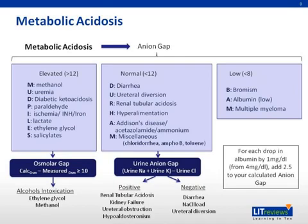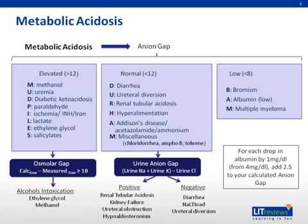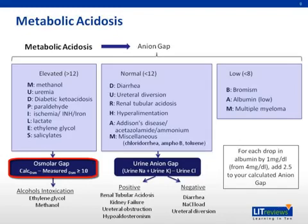Other important causes of high anion gap metabolic acidosis are alcohol intoxications, including methanol and ethylene glycol. In order to differentiate these intoxications, we need to measure the osmolar gap. The osmolar gap is the difference between the calculated osmolarity and the osmolarity measured by the lab. This difference is normally below 10. If greater than 10, this suggests the presence of an unmeasured osmol as the cause of the metabolic acidosis.